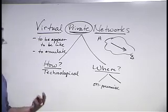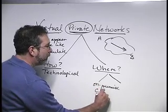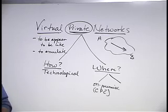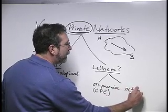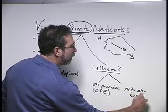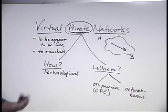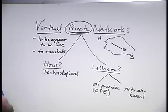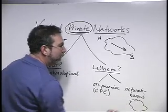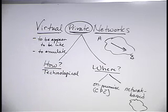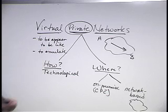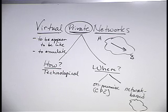That on-premises option might be in a box or a piece of equipment — some people refer to this as a CPE, or customer premise equipment, solution. The alternative is that we might have some kind of network-based approach to creating the privacy, something that wouldn't be done by yourself but might be out there in an actual cloud. Now let's go back to the technological discussion. If I were to ask you how you would create privacy, what kinds of things might you do?